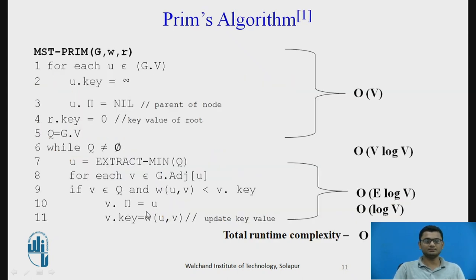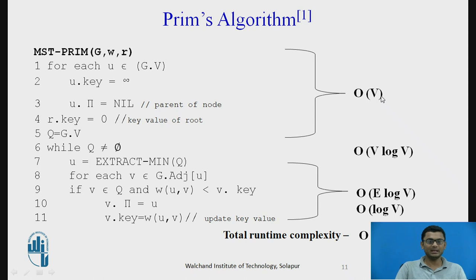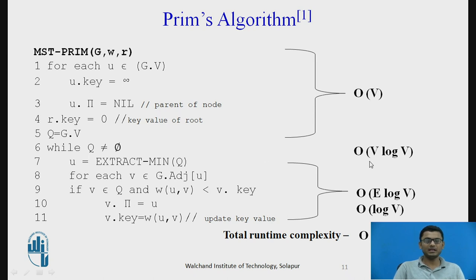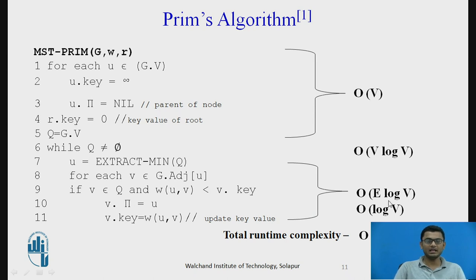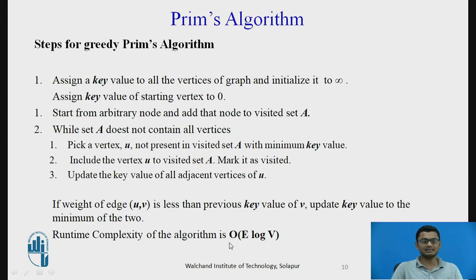Looking at the algorithm, lines 1 to 5 take O(V) time for execution. The extract-minimum operation takes O(V log V) time. The block from lines 8 to 11 takes O(V log V) time, giving a total runtime complexity of O(V log V).